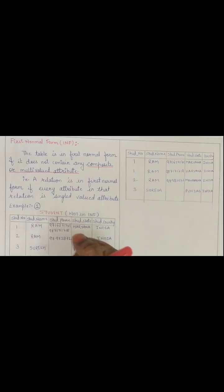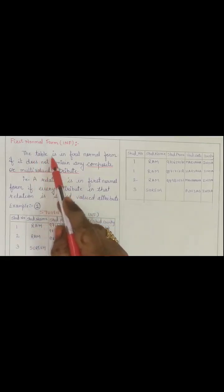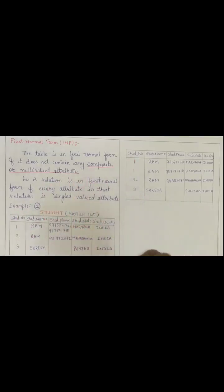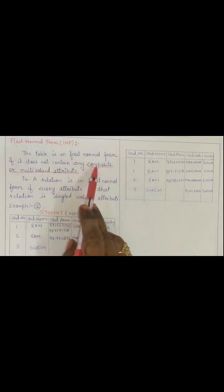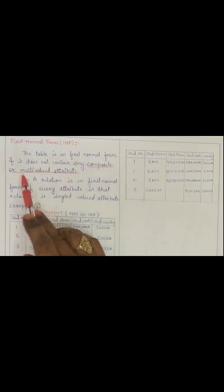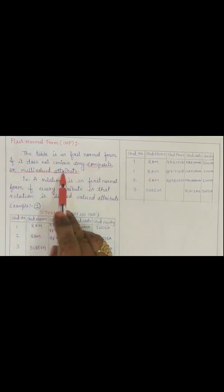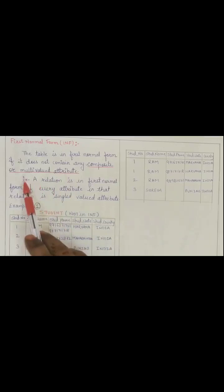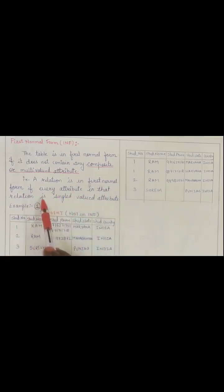Now, when is a table said to be in 1NF? The table is in first normal form if it does not contain any composite or multi-valued attribute. Always remember, when we talk about first NF, there is no composite or multi-valued attribute. A composite or multi-valued attribute means an attribute which is having more than one value. A relation is in first normal form if every attribute in that relation is a single-valued attribute.